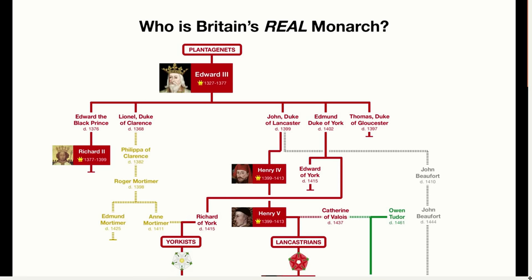At this point, it hadn't yet been firmly established whether England should follow male-only primogeniture or male preference primogeniture. Male-only means that only males can inherit, and this is what Henry IV based his claim on, being that he was the next most senior male. However, if male preference had been followed, it would have meant that the line could pass through a female so long as that female did not have any brothers.